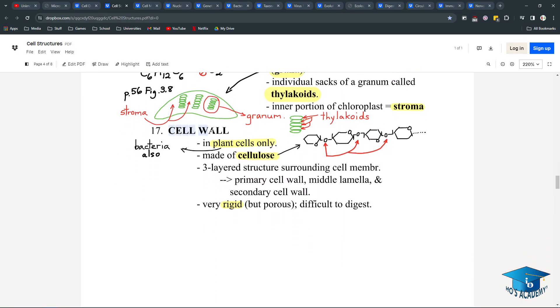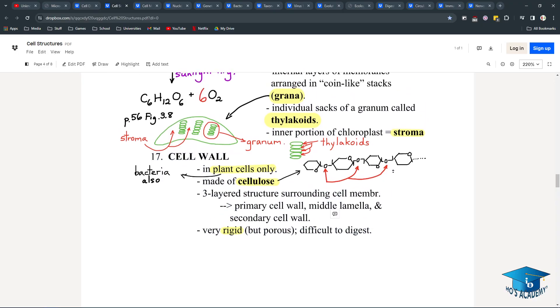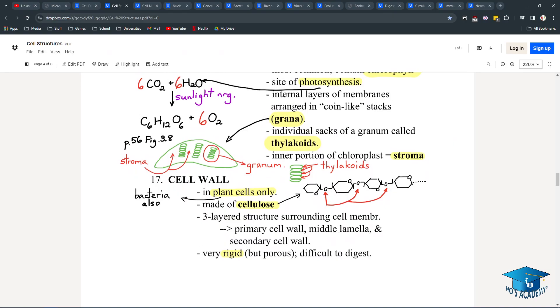And the cell wall, in plant cells only, is made of cellulose, which is a three-layered structure surrounding the cell membrane. This is a pretty important point because I've seen questions about it. There's primary cell wall, middle lamella, and secondary cell wall. It's rigid but porous, difficult to digest. Some animals that might be able to are like rabbits, cows, who eat grass.